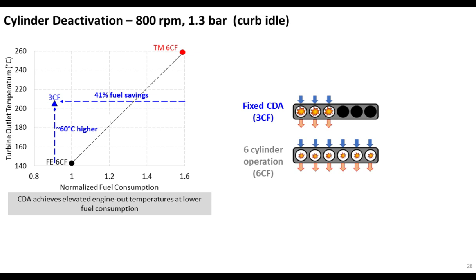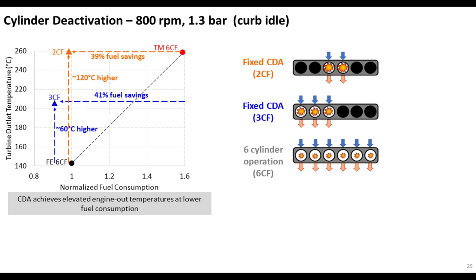If instead we deactivate three cylinders — three cylinders fired — we can reduce fuel consumption below even our fuel-efficient mode during six-cylinder operation and achieve temperatures in excess of 200 degrees C, which is where we want the SCR to be and the kind of temperature we want going into the after-treatment to be able to dose urea without worrying as much about crystallization. We could also see some additional benefit of deactivating four cylinders instead of three. Whether you've got two cylinders activated or three, it's up to you to choose — and from engine to engine there will be differences. If you want to get to that 260 degrees C that you're getting with the conventional strategy, you can get there and still achieve a significant reduction in fuel consumption and CO2 emissions by running the two CF modes.